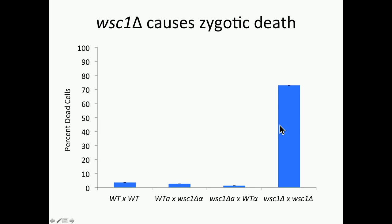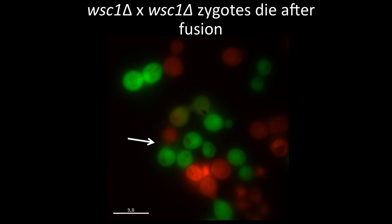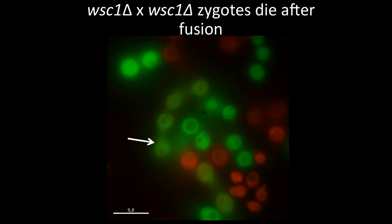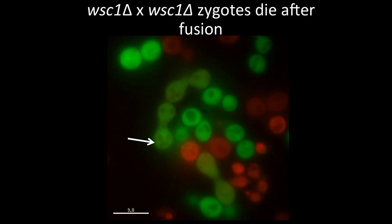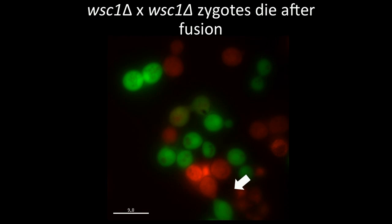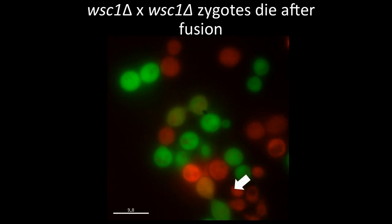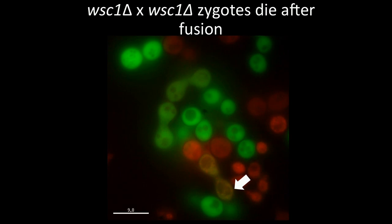The remaining question from the FM4-64 staining was: are these two cells that came into contact and independently died, or have they fused and then died? Using live imaging, one mating partner starts out with cytoplasmic GFP and the other with cytoplasmic DSRED. You can see that the markers transfer, indicating the two cells have fused. For dying zygotes, after fusion you get punctate DSRED and loss of cytoplasmic GFP in the same way seen with mid2 cells. Live/dead and propidium iodide staining confirmed that these cells are dying after fusion.